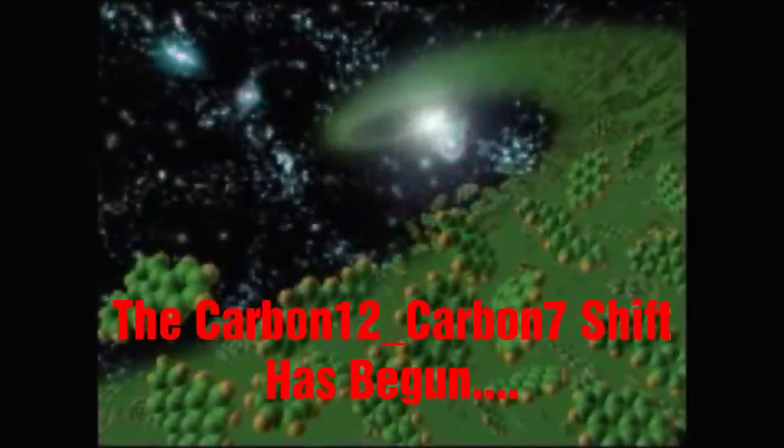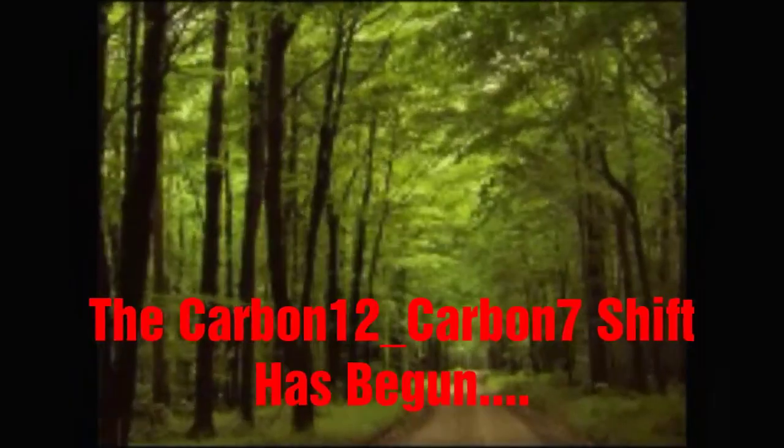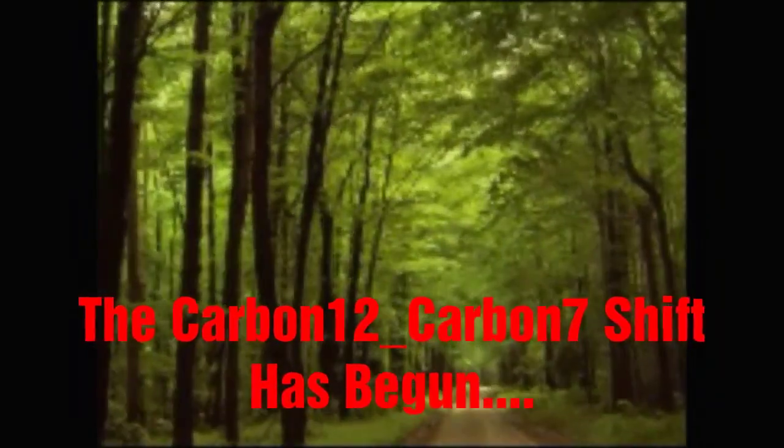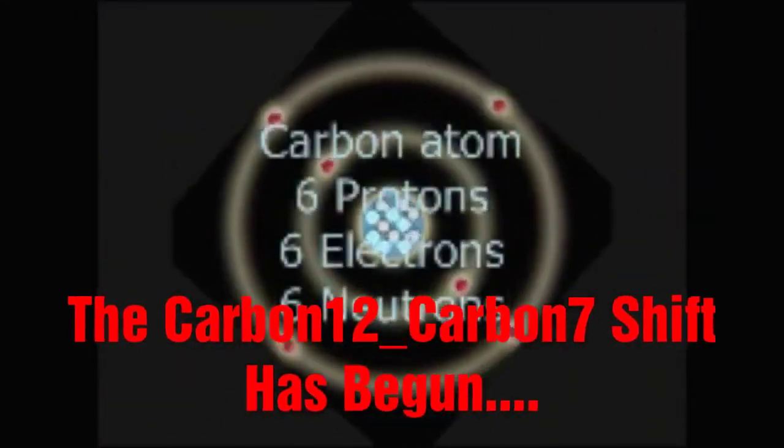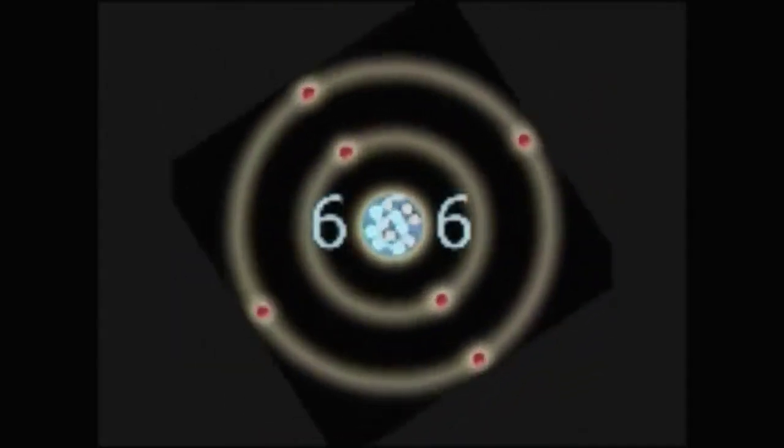Carbon, as previously stated, is the basic building block of life as we know it. And carbon-12 is the most abundant form of carbon, accounting for about 99% of all known forms of carbon. It is the isotope of carbon that consists of 6 protons, 6 electrons and 6 neutrons. 6, 6, 6. Does that sound familiar?